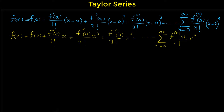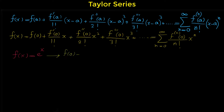Now let's do an example. We want to find the Maclaurin series for the function f of x equals e to the x. For finding the Maclaurin series of a function we have to calculate these values: f of 0, f prime of 0, f double prime of 0, and so on. For this function, f of 0 is e to the 0, and e to the 0 is 1.